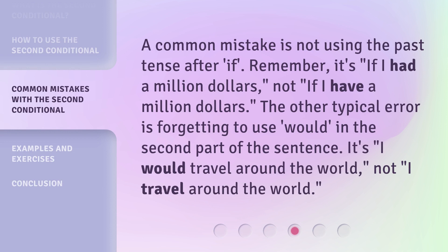A common mistake is not using the past tense after 'if.' Remember, it's 'if I had a million dollars,' not 'if I have a million dollars.' The other typical error is forgetting to use 'would' in the second part of the sentence. It's 'I would travel around the world,' not 'I travel around the world.'